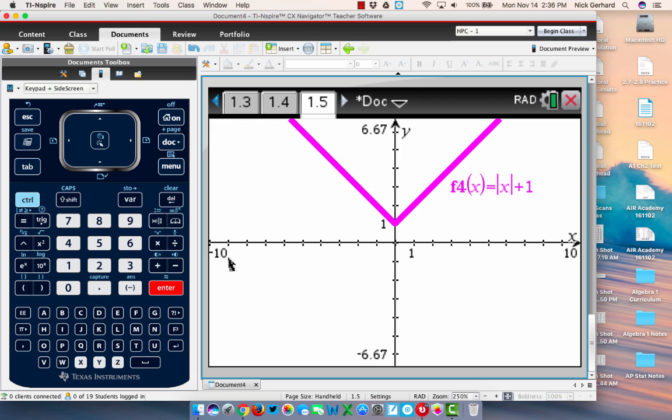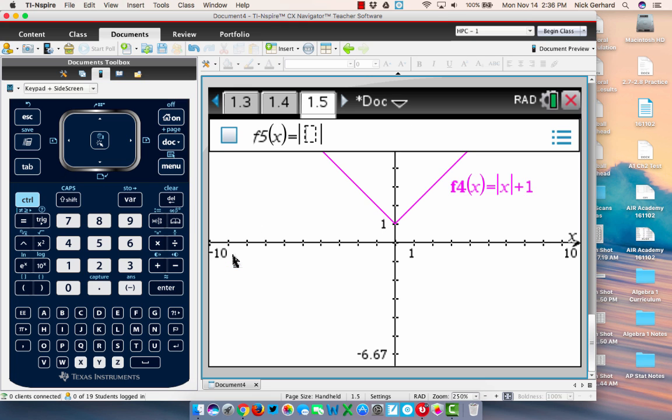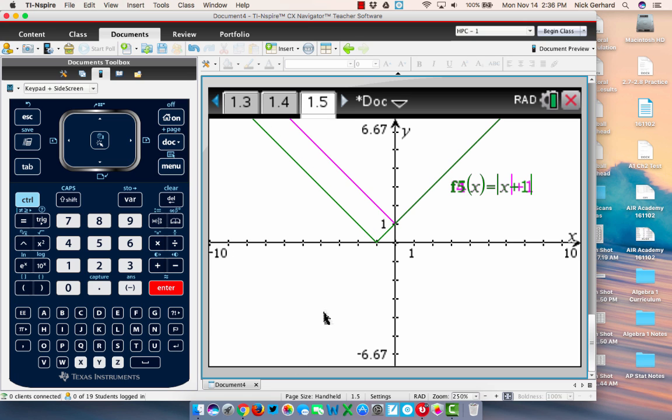Because if you do that, that's what your correct graph should look like. If you're not careful and you don't get out of the absolute value, you'd have absolute value of x plus 1 all in the absolute values. It's a much different graph.